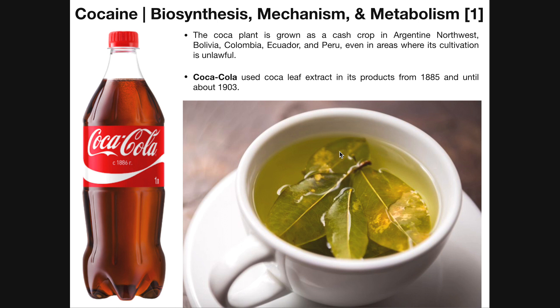Cocaine is obviously abused as a recreational drug. However, past and present, there are some uses of cocaine you may not be aware of that are kind of interesting. Here we have what appears to be an herbal tea — and it technically is an herbal tea — but these leaves are actually from coca plants. In a similar way to how you would steep a tea, they're doing the same thing with the coca leaves, and the water will actually pick up the contents of the leaves, so it has cocaine in it. The major difference is that the amount of cocaine from this herbal tea is very, very small compared to abusing it in the typical manner.